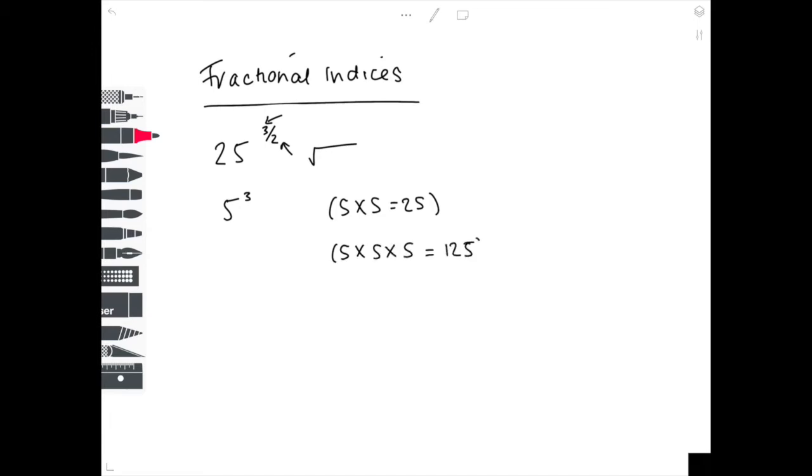Now we're looking at 81 to the 3 over 4. So the 4 means that we need to find the fourth root. So what number do we multiply by itself 4 times to get to 81? Well that is 3, so 3 times 3 times 3 times 3, because 3 times 3 is 9, 9 times 3 is 27, 27 times 3 is 81.